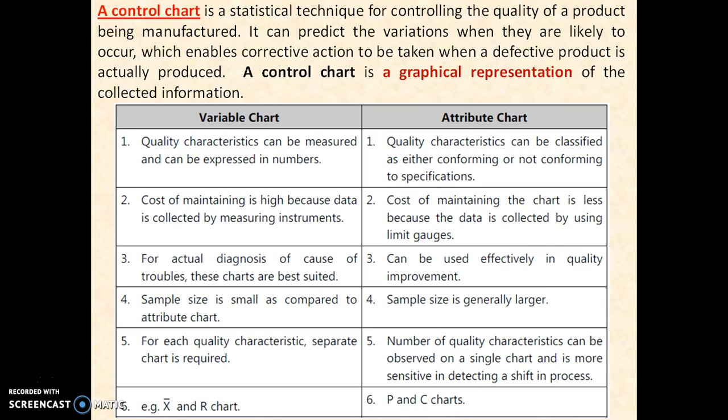A control chart is a statistical technique for controlling the quality of product being manufactured. There are two broad categories: variable charts and attribute charts. Variable charts are plotted from data of quality characteristics which can be measured. Attribute charts are plotted from data where we can understand whether the quality characteristics conform to requirements or not. The cost of maintenance is high for variable charts, less for attribute charts.